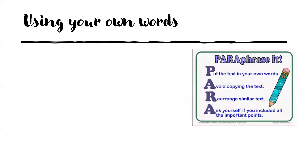Let's look at how we're going to use our own words. I found a graph that shows you how to do this — basically, you're paraphrasing. You're putting the text into your own words and avoiding copying it word for word. You can rearrange words or use similar words, and ask yourself if you included all the important points. When paraphrasing, you need to put it into your own words, include the main points, and avoid copying the text.